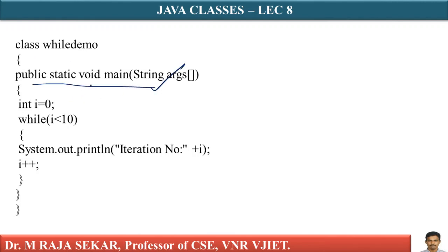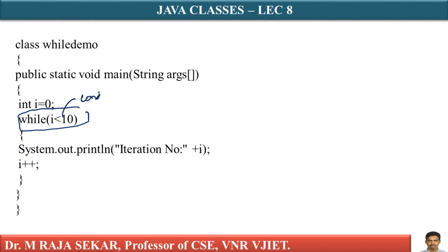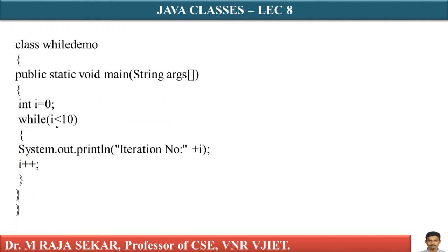We have public static void main, which we already know. Int i is an integer type variable initialized to zero. This is my while loop: while i is less than 10. This is the condition — this while loop will get executed repeatedly until this condition is terminated.